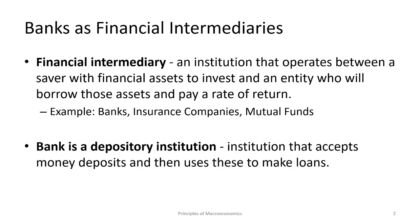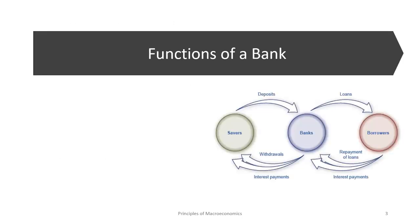The second important definition is that a bank is a depository institution, which means that it accepts deposits and then uses them to make loans — that is the basic function of a bank. Banks exist because we deposit our money with them, and then they use this money to help people buy a new car, a new home, pay for education, or pay for a vacation. These are the loans they give out.